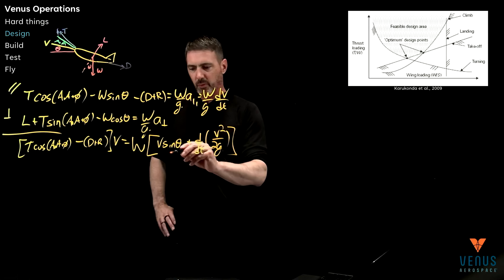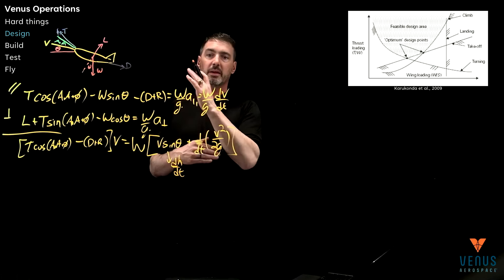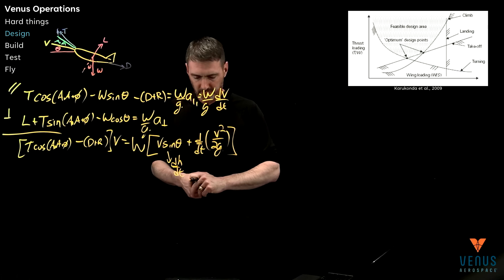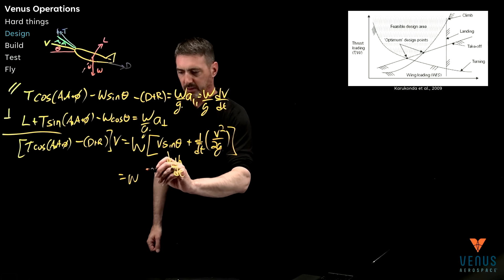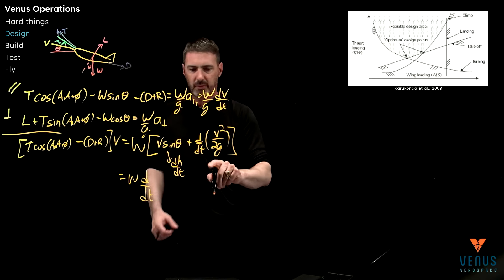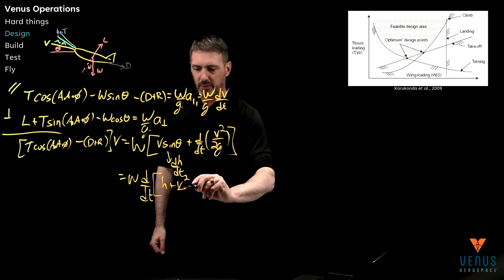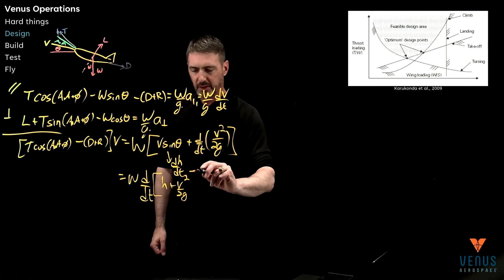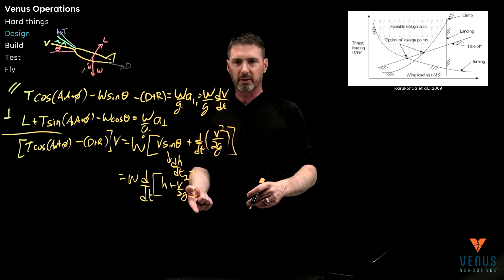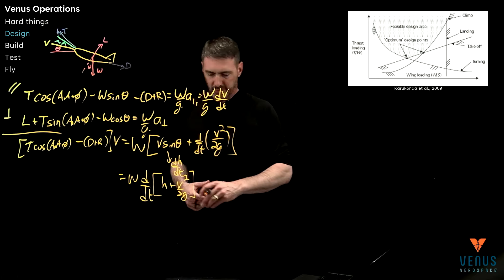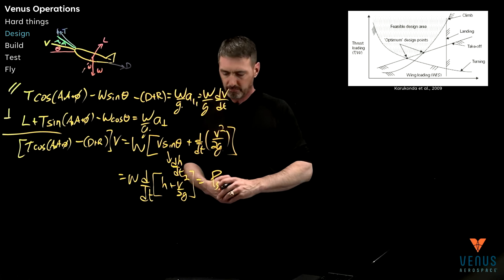A couple different things. This is actually the rate of change of altitude with respect to time, V sine theta. So that's helpful. Really this whole side here can pick up weight, time rate of change, and then hopefully you see where this is going, that's just H plus V squared over 2G. Really that's power, that potential energy and the kinetic energy. What's the change of that? That's super useful. A lot of times that's just we call that the power, the change in power.